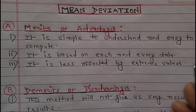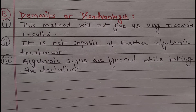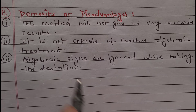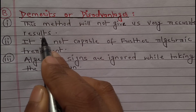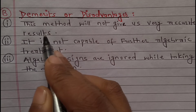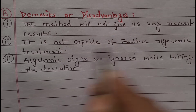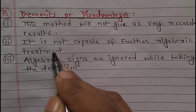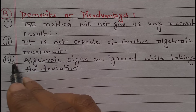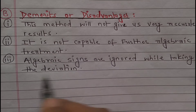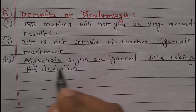Point three of mean deviation merits — it is less affected by extreme values. Now the demerits of mean deviation: Point one — this method will not give very accurate results. Point two — it is not capable of further algebraic treatment. Point three — algebraic signs are ignored while taking the deviation.